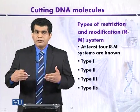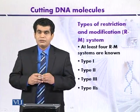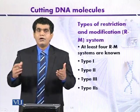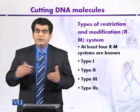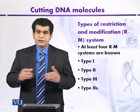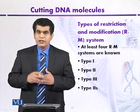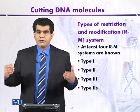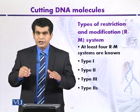Now we can focus on different types of restriction and modification systems, or R-M systems. In different types of microbes, different types of restriction and modification systems are present. These can be categorized as type 1, type 2, and type 3. These are the main three types.